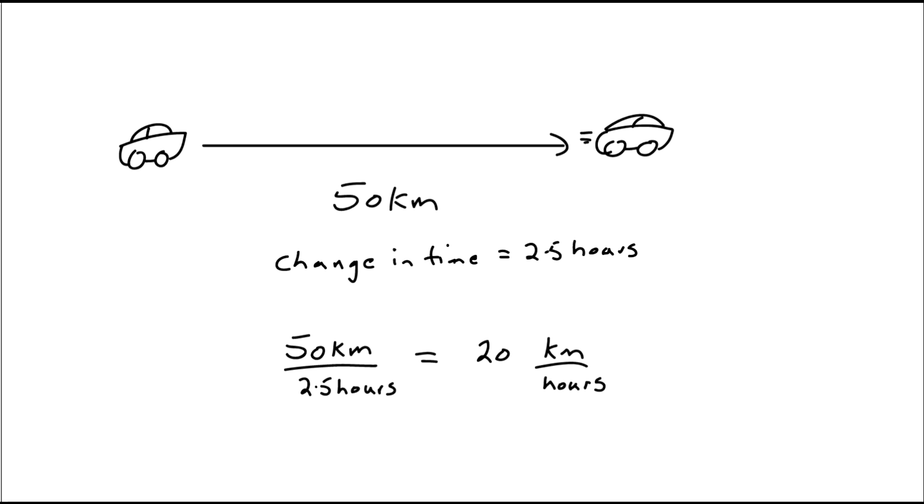There is no direction given. We only know how fast the car is going, its speed. So this is the scalar quantity.